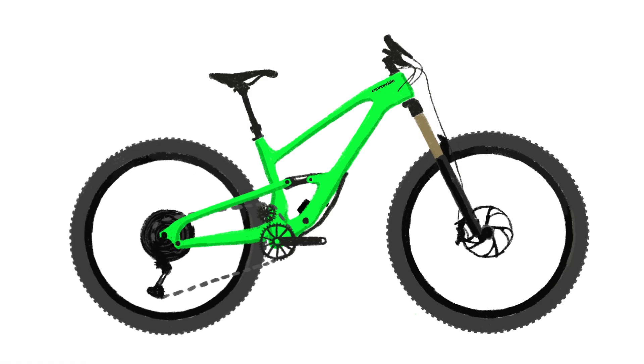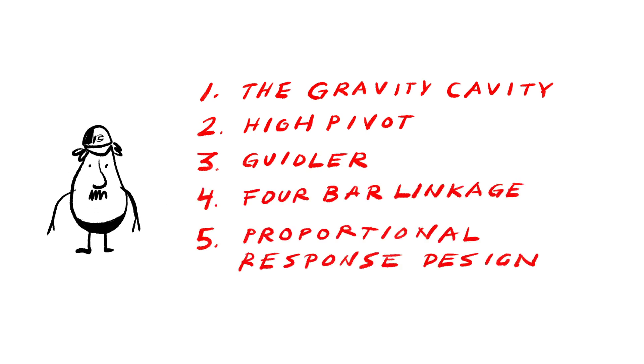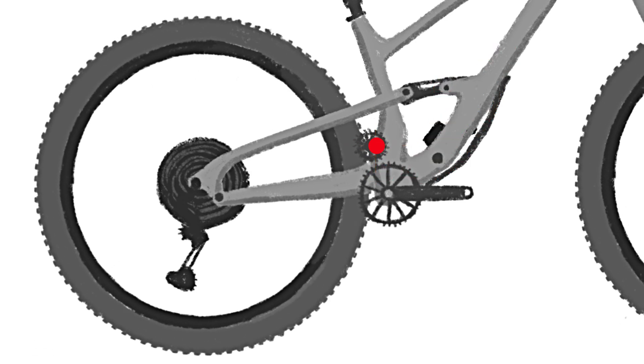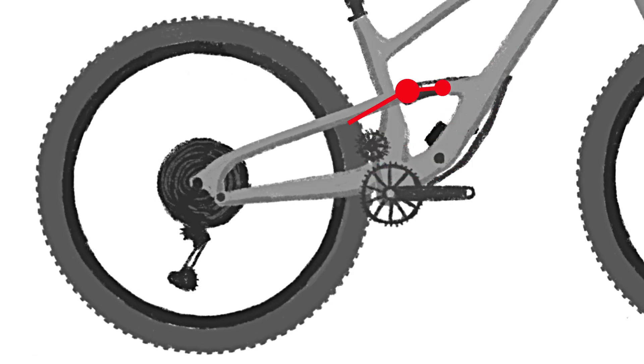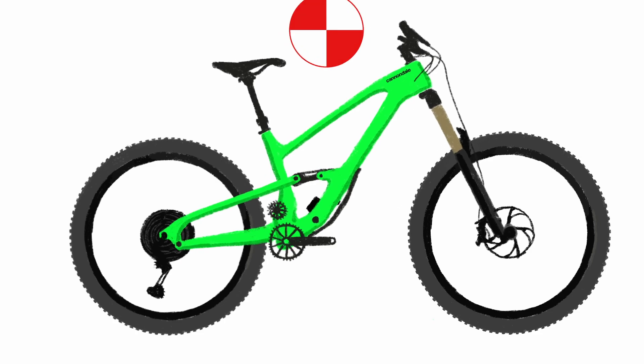It looks different, it acts different, and man does it go like hell. Today we're gonna break it down and focus on the five elements that all work together in a kind of beautiful kumbaya harmony to deliver Jekyll's unbeatable suspension performance. There's the gravity cavity, the high pivot, the Geidler, the four bar linkage, and then the special sauce that ties it all together, our proportional response size specific design.